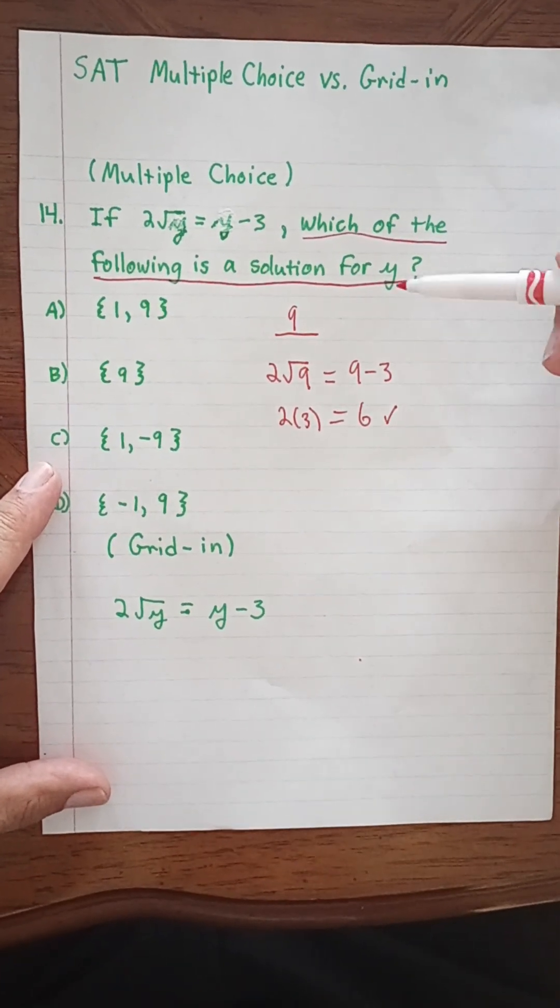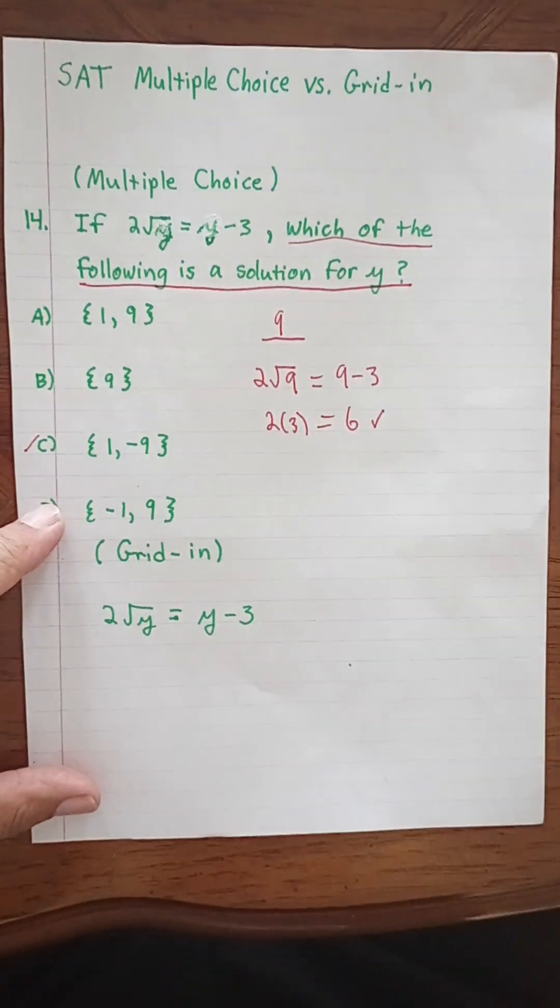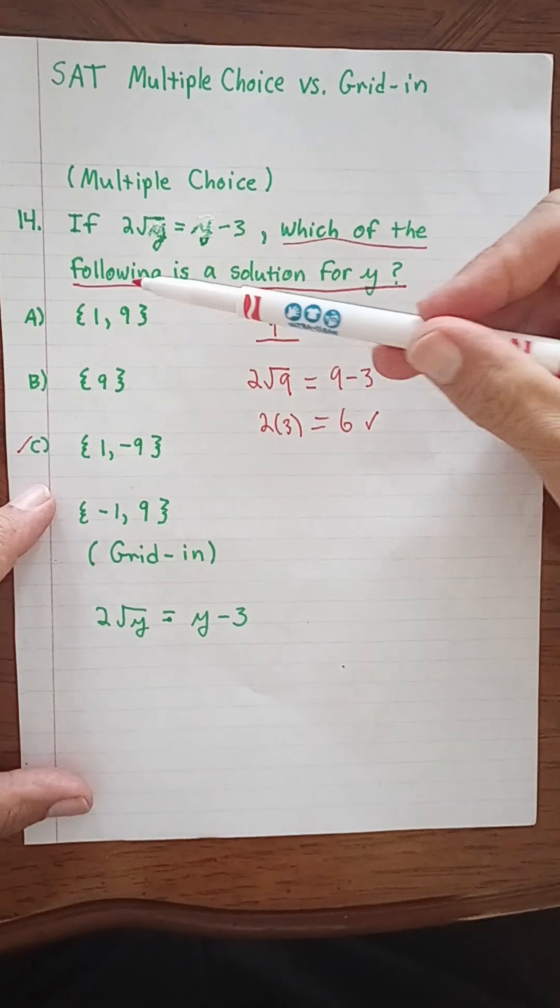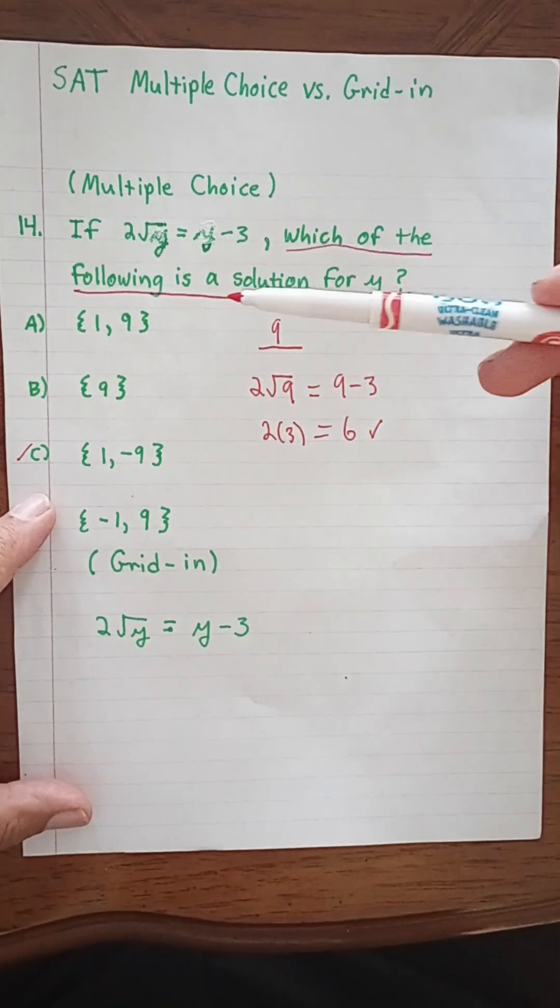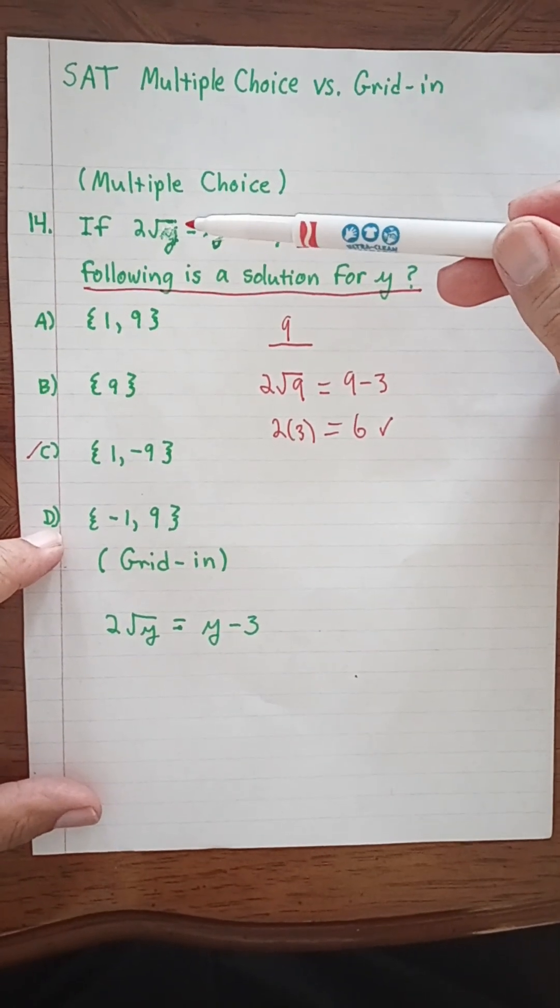So we know here that 9 works and we can eliminate c, which is negative 9. Now we see that 1 and negative 1 are in a number of these answers. Actually negative 1 is not going to work here. We can see that right away.